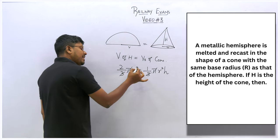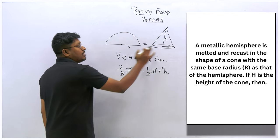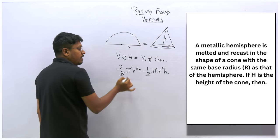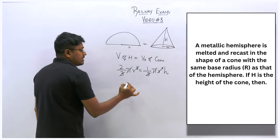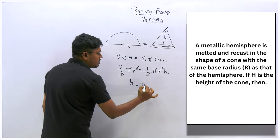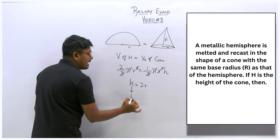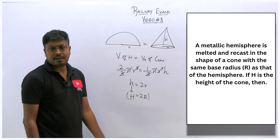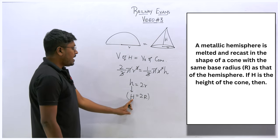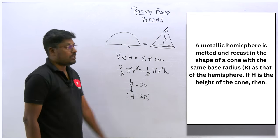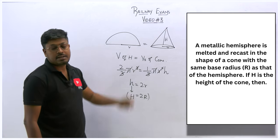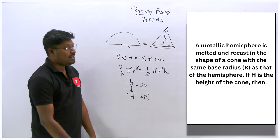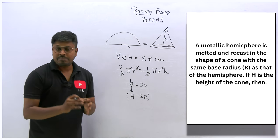Cancel 3 and 3, cancel π and π, and cancel r and r since both radii are the same. The result is h = 2r. Since they denote height as H and radius as R, the height of the cone equals 2 times the radius.